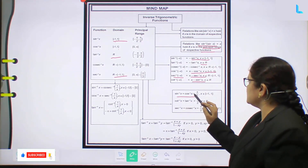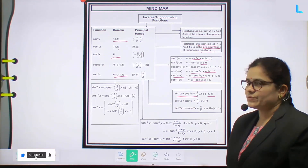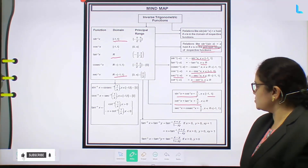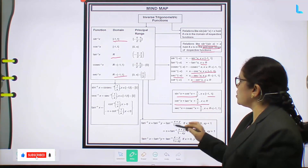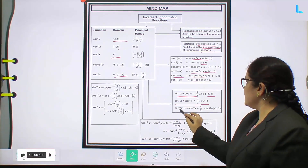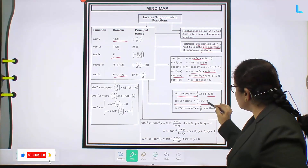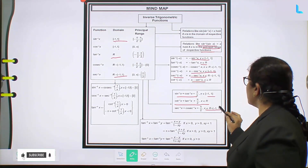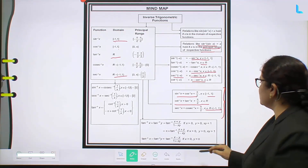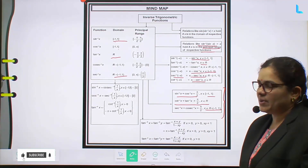Sin⁻¹x plus cos⁻¹x equals π/2, where x belongs to the closed interval [-1, 1]. And cot⁻¹x plus tan⁻¹x also equals π/2. And next, sec⁻¹x plus cosec⁻¹x equals π/2 as well, where x belongs to the domain ℝ minus the open interval (-1, 1). These three pairs all equal π/2.